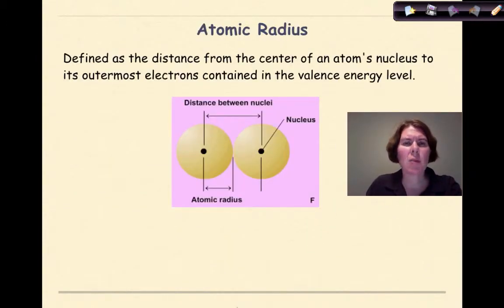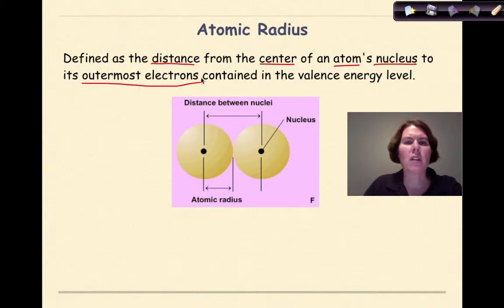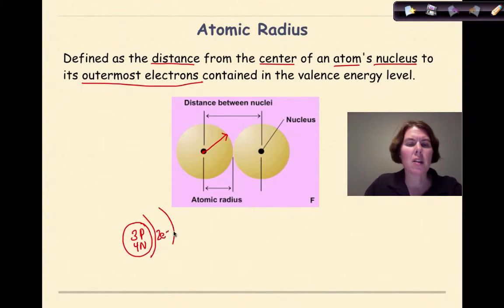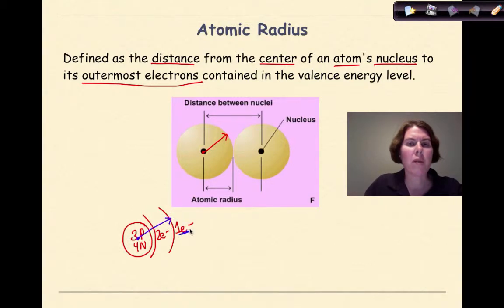What is atomic radius? The definition of atomic radius is the distance from the center of the atom's nucleus to its outermost electrons contained in the valence energy shell — in other words, from the nucleus at the very center all the way out to where the valence electrons are located. So if we did a Bohr model of lithium, with 3 protons and 4 neutrons in the nucleus, 2 electrons in the first shell and 1 in the second, the atomic radius goes from the center of the nucleus out to that outermost shell where we find the 1 valence electron.